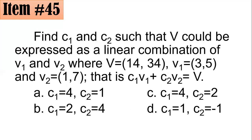Item 45. Find C sub 1 and C sub 2 such that V could be expressed as a linear combination of V sub 1 and V sub 2, where V is (14, 34), V sub 1 is (3, 5) and V sub 2 is (1, 7). That is, the product of C sub 1 and V sub 1 added by the product of C sub 2, V sub 2 is equal to your V. Which one do you think is the correct answer?